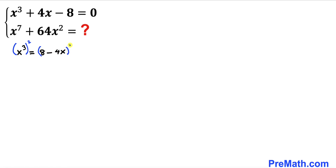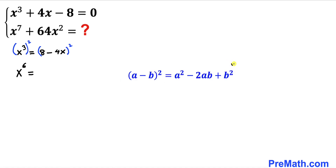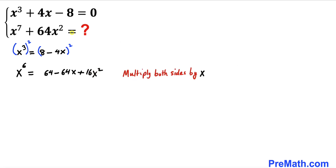Let's recall the power rule of exponents — we'll apply it on the left hand side, multiplying the exponents, giving us x^(3×2) = x⁶. On the right hand side, we apply the identity (a - b)² = a² - 2ab + b², which gives us 64 - 64x + 16x².